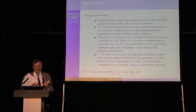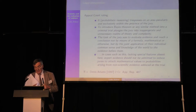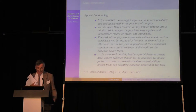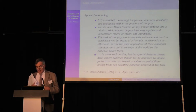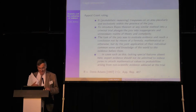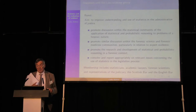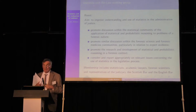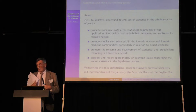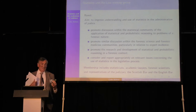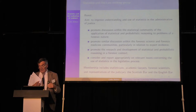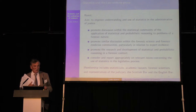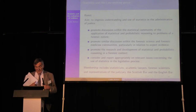Following the Sally Clark case a couple of years later, where a very low probability for two sudden infant deaths may well have had a very large effect on the outcome of the trial, the Royal Statistical Society set up a statistics working group. The remit was to improve understanding and use of statistics in the administration of justice, discussion within the statistical community, discussion within the forensic science and forensic medicine community, research and development, and reporting appropriately.